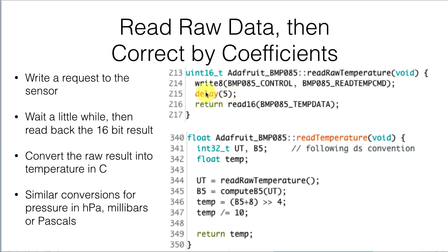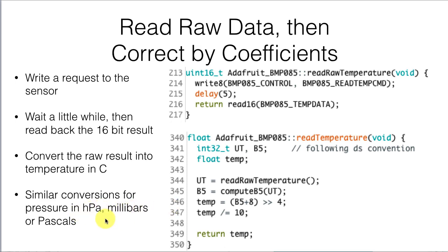After reading, the library converts the raw data into an actual result. For temperature, it reads the raw temperature data, calculates a B5 value from that raw value, then adjusts it to get an actual temperature in degrees Celsius. There are similar conversions for pressure in hectopascals, millibars, or pascals.